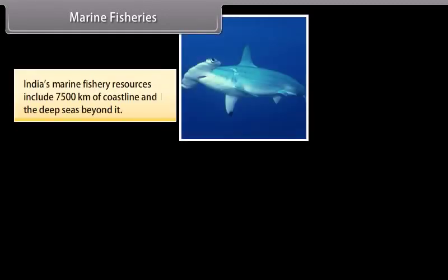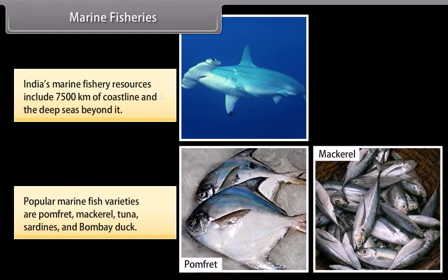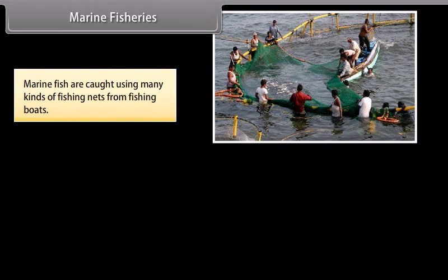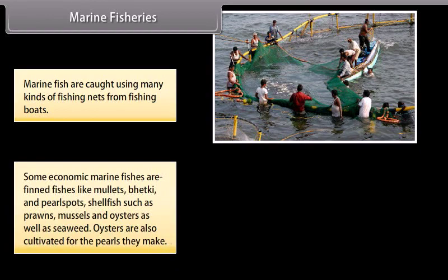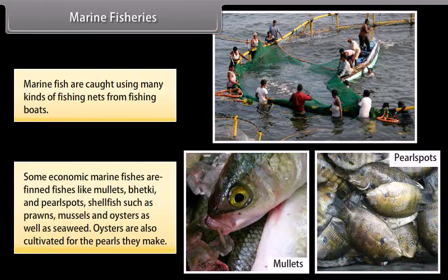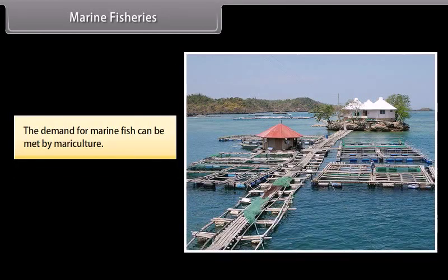India's marine fishery resources include 7,500 km of coastline and the deep seas beyond it. Popular marine fish varieties are pomfret, mackerel, tuna, sardines and Bombay duck. Marine fish are caught using many kinds of fishing nets from fishing boats. Some economically important marine fish are finfish like mullets, bhetki and pearl spots, shellfish such as prawns, mussels and oysters, as well as seaweed. Oysters are also cultivated for the pearls they make. The demand for marine fish can be met by mariculture.